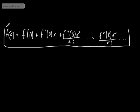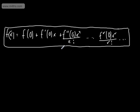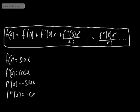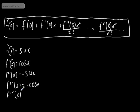So f of x equals sine x. The first derivative, f dashed of x, equals cos x. The second derivative, f double dashed of x, equals minus sine x. The third derivative, f triple dashed of x, equals minus cos x. And the fourth derivative of x is going to be equal to sine x.